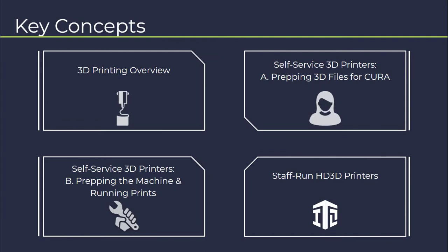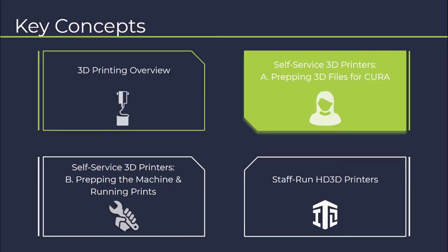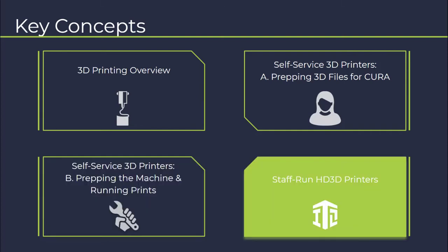In this four-part series we'll be covering four key concepts. In part one we'll do a 3D printing overview — what 3D printing is and when to use it. In part two we'll dive into our self-service 3D printers, beginning with how to prepare 3D files for Cura, the slicing software that communicates with the printers. In part three we'll learn how to prepare the machine and start your print. And in part four we'll talk about our staff-run high-definition 3D printers and how you can get parts run on those.